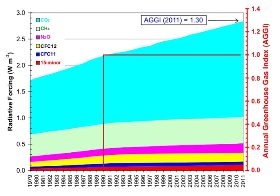Ice cores provide evidence for greenhouse gas concentration variations over the past 800,000 years. Both CO2 and CH4 vary between glacial and interglacial phases, and concentrations of these gases correlate strongly with temperature. The ice core record indicates CO2 mole fractions stayed within a range of 180 ppm to 280 ppm throughout the last 800,000 years until the increase of the last 250 years. However, various proxies and modeling suggest larger variations in past epochs — 500 million years ago CO2 levels were likely 10 times higher than now.